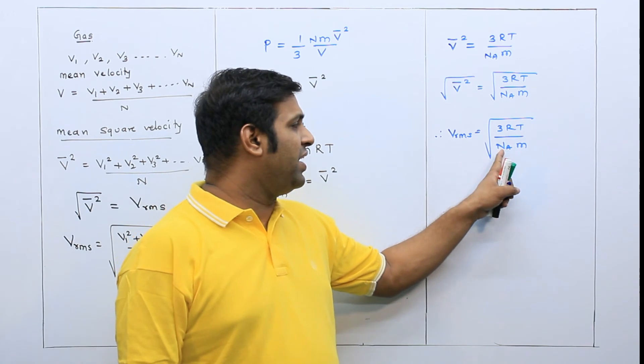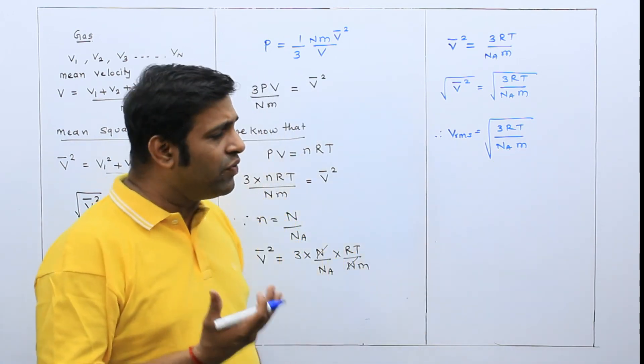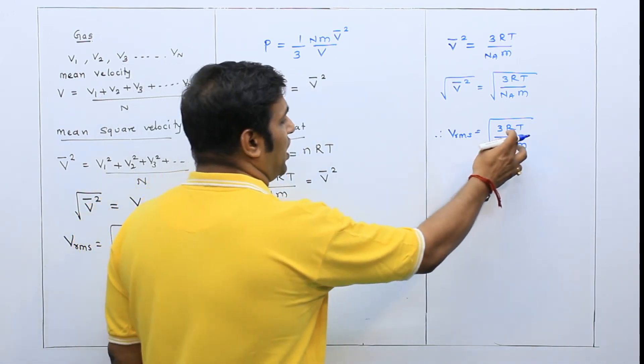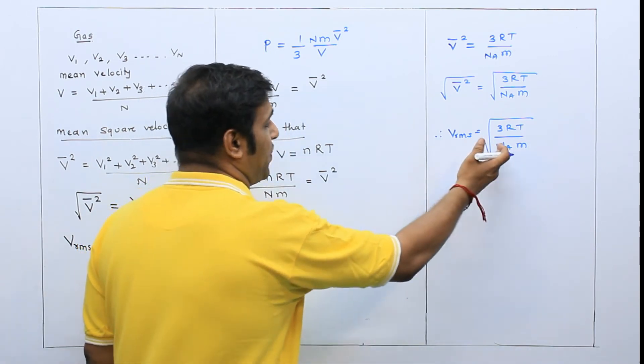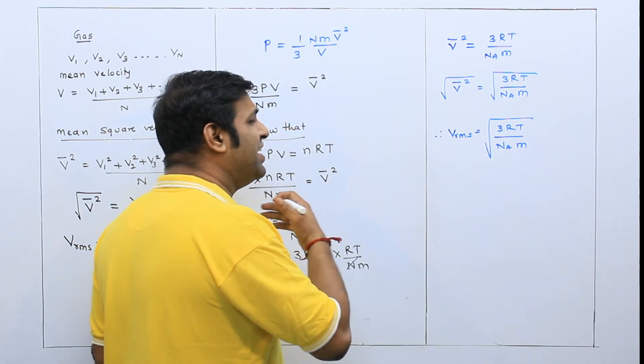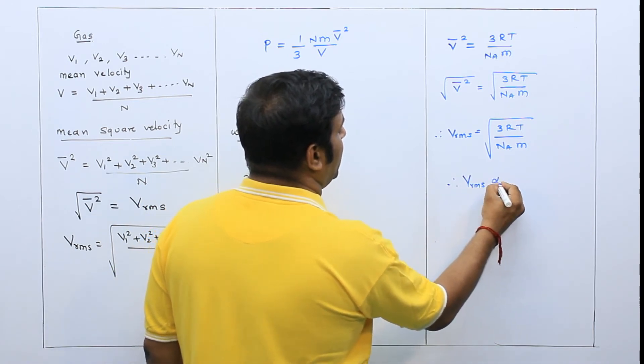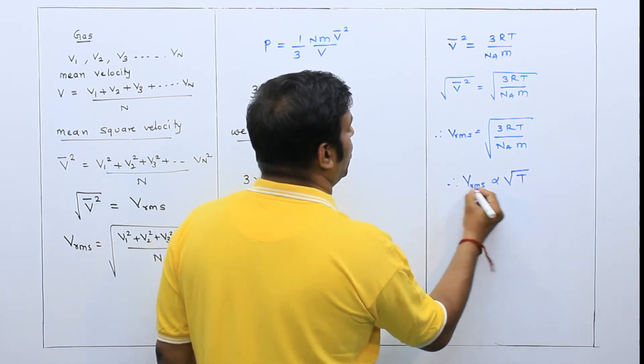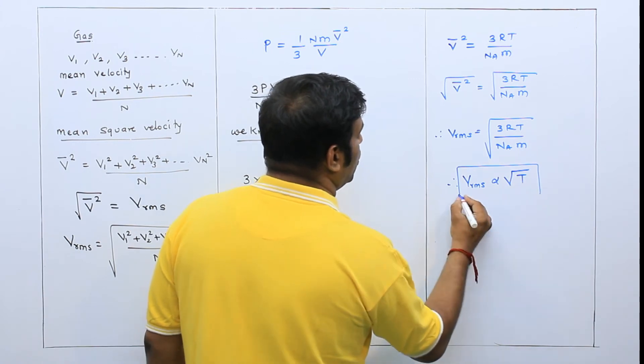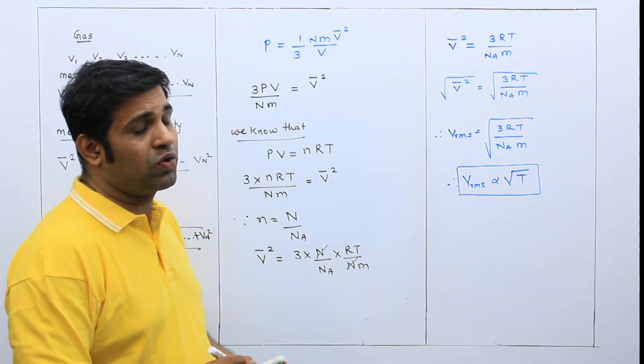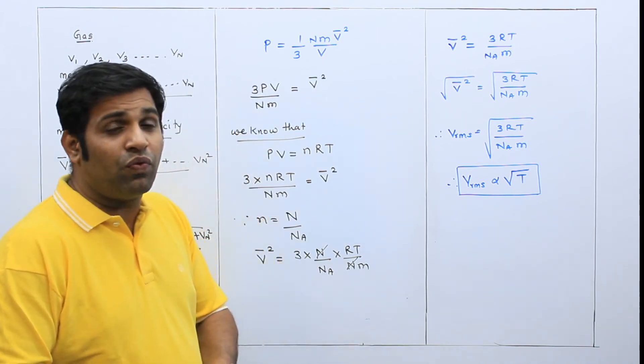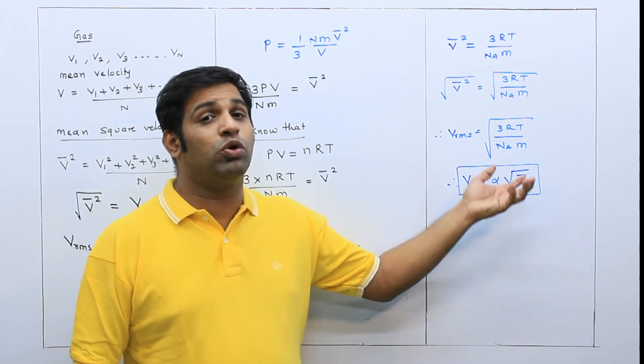Therefore, I got V RMS is root of 3RT upon NA into M. Now 3R, NA, M, all these are constants. This is universal gas constant, this is Avogadro's number, this is mass constant. All these things are constant. Therefore, I can say V RMS is directly proportional to root of T.